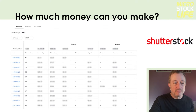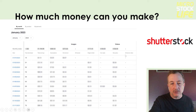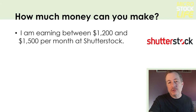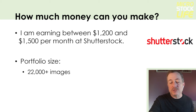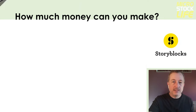Here's a sample screen from January 2023 showing how Shutterstock breaks down your dashboard of earnings — total downloads, types of image downloads, and types of video downloads. I'm earning between $1,200 and $1,500 a month at Shutterstock. My portfolio size there is very similar to Adobe Stock — they have my full portfolio of more than 22,000 still images and 6,500 videos.